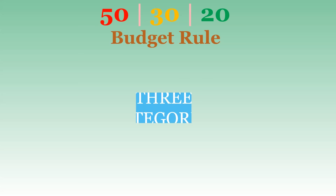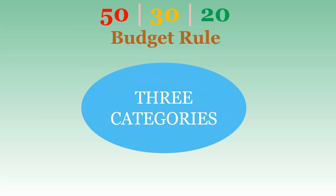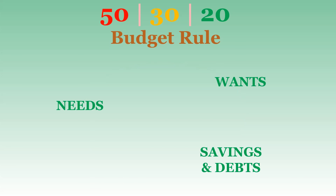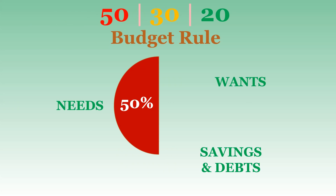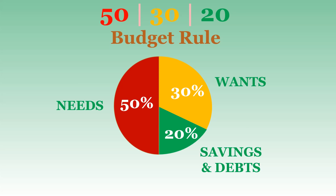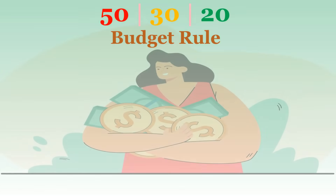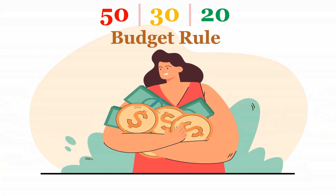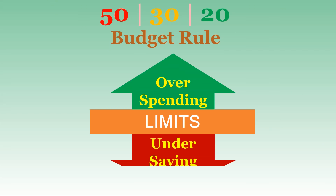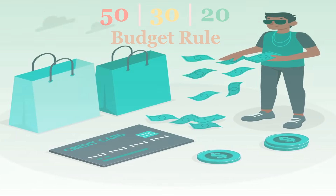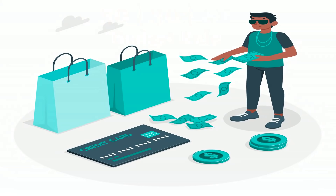In recap, the 50-30-20 budget rule is a guide for organizing your expenditures into three categories — needs, wants, and savings and debts — with 50% of your after-tax income going towards your needs, 30% going towards your wants, and 20% going towards your savings and debts. Most people save too little and unknowingly spend too much. The 50-30-20 rule is a way to become more aware of your financial habits and to help you limit overspending and undersaving. By spending less on the things that don't matter that much to you, you can save more for the things that do.